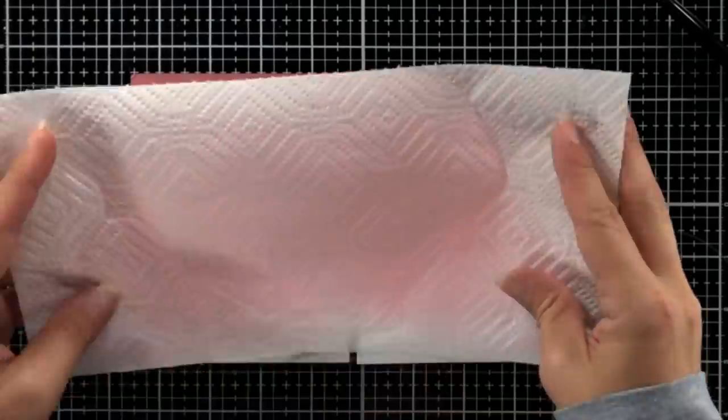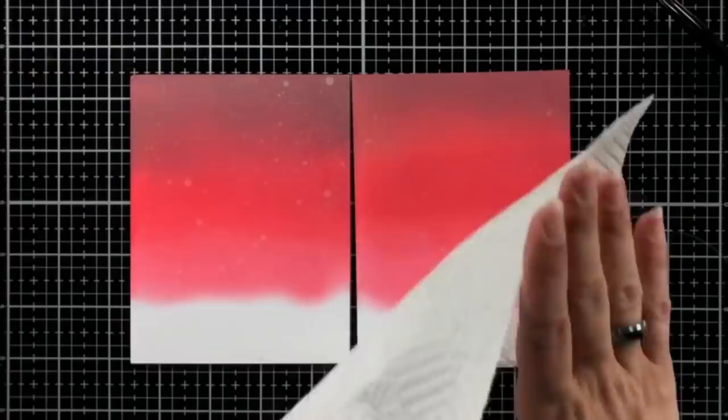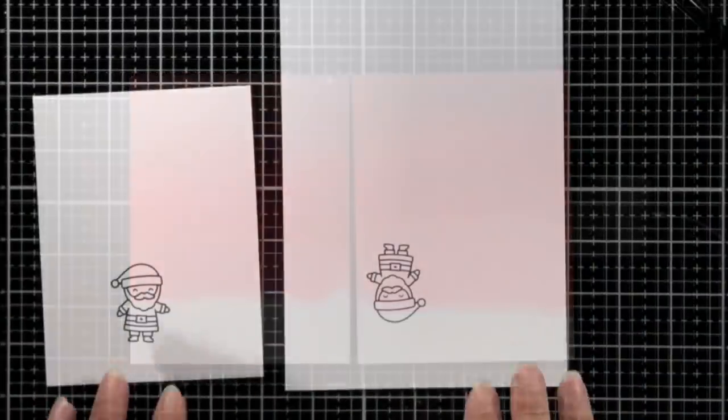I have both of my panels shown here and I'm just spritzing that with some clean water and I'll dab that up with a paper towel. That just adds a little bit of interest to the background, almost like there is snow.